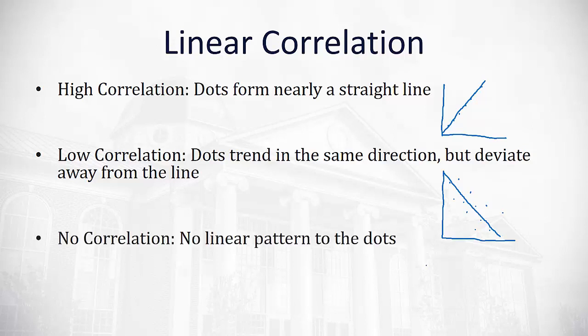We can even get as extreme as, say, we have no correlation. And that's where we see no apparent pattern in the graph where the dots are just all over the place with no up or down tendency. The best fit line we could draw would be almost a horizontal line, which is really useless to us in predicting data values. So, that would be no correlation.